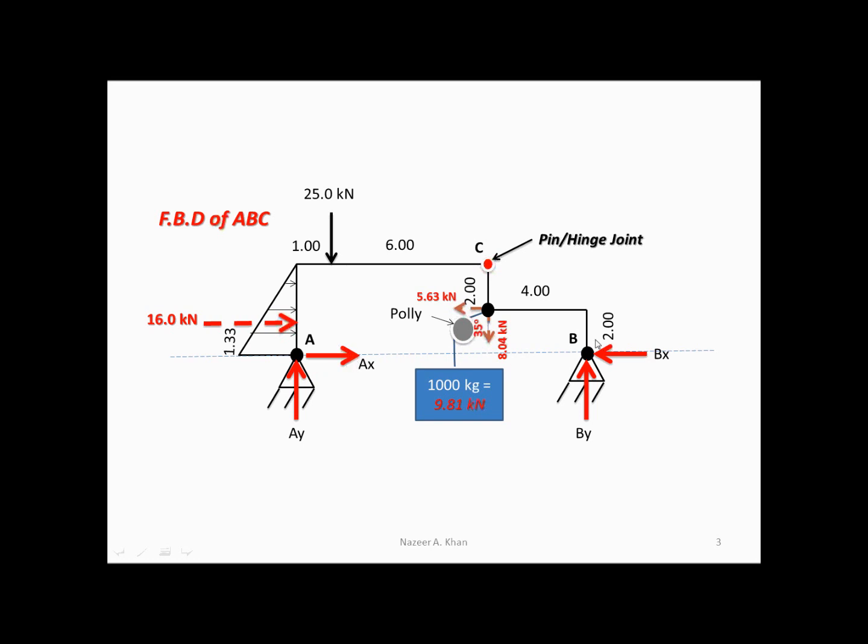If our calculations for the magnitude of any one of these forces happen to give a negative result, then our assumption about its sense is incorrect. So that's it — we have an FBD of the entire structure.